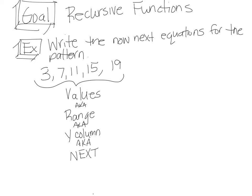When working with recursive functions and they give you a set of numbers, this is actually the Y column. Two major things they'll be looking for: first, they want to know the start — that's pretty self-explanatory, it's your starting number, so your start is going to be 3. Then it wants to know your NOW NEXT statement. It's kind of backwards, because they say NOW NEXT but they really want you to write the NEXT first. So you write your NEXT and say what your NEXT is going to equal.